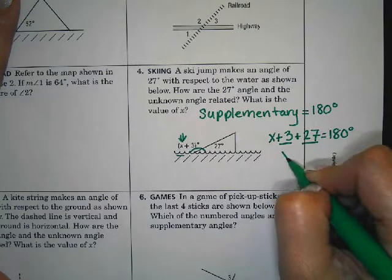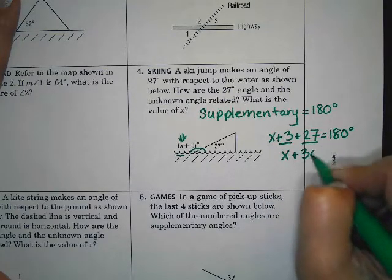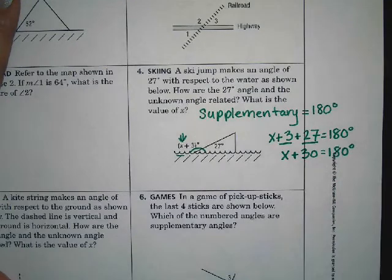So I'm going to bring down my x. x plus 30 is equal to 180 degrees, and now I have a one-step equation that I can solve.